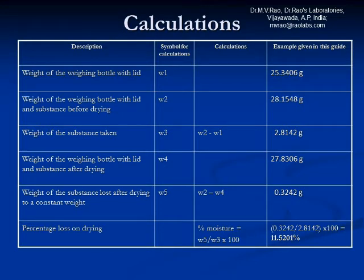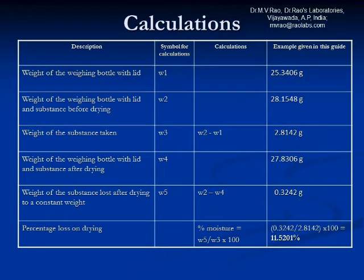Let's get into calculations. The weight of the weighing bottle with lid, W1, is 25.3406 grams. The weight of the weighing bottle with lid and substance before drying, W2, is 28.1548 grams. Therefore, the weight of the substance taken, W3, which equals W2 minus W1, is 2.8142 grams. The weight of the weighing bottle with lid and substance after drying, W4, is 27.8306 grams.